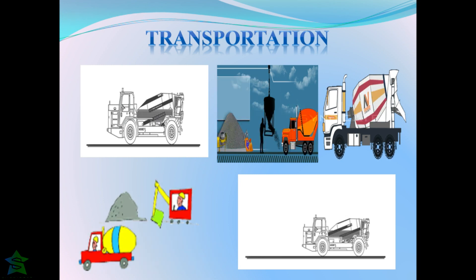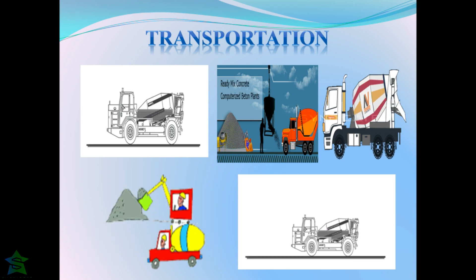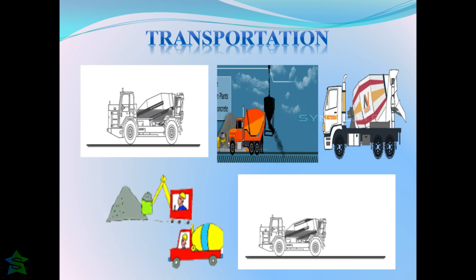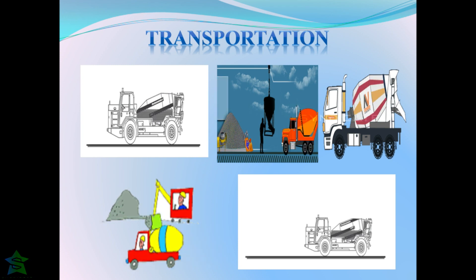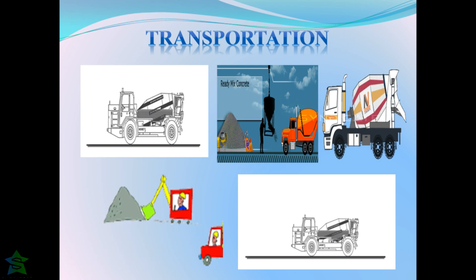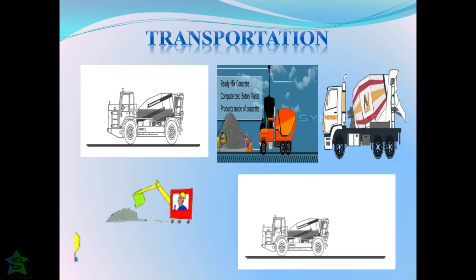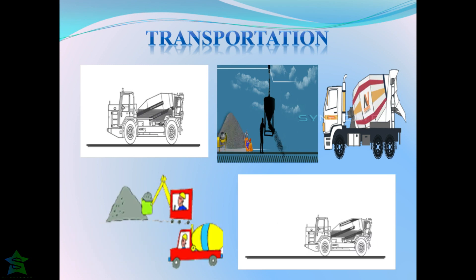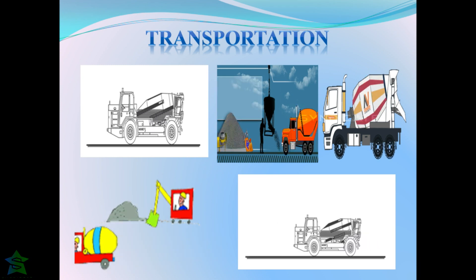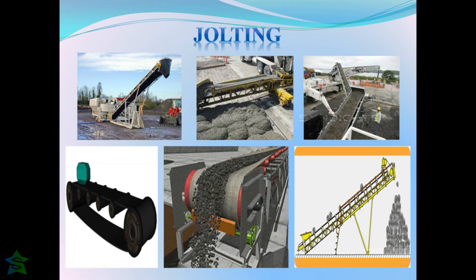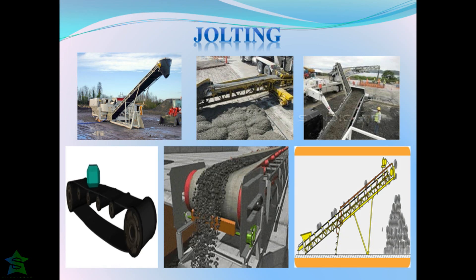Concrete is transported to medium heights using hoists and buckets. Ready-mix concrete is pumped using concrete pumps, pipes, or boom placers. When the distance from the batching plant to the site is more, it takes more time for transportation of concrete, which leads to stiffness in concrete and in turn causes segregation.